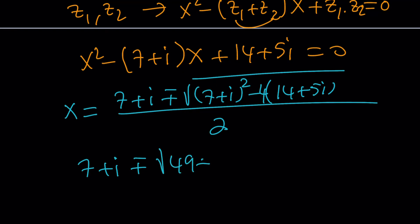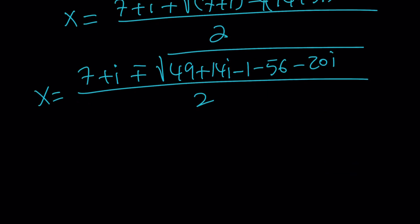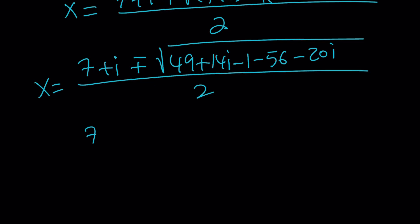So, we're going to simplify the expression inside the radical. 49 plus 14I plus I squared, which I'm going to write as negative 1. And then distribute to negative 4, negative 56, minus 20I all over 2. And then, we're going to get two solutions. But let's simplify inside the radical.